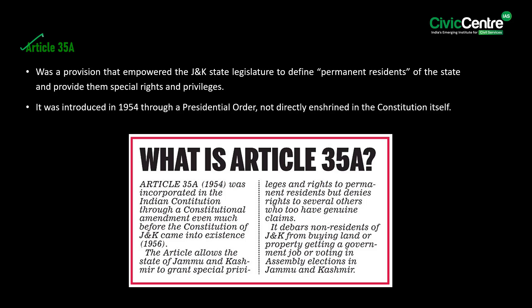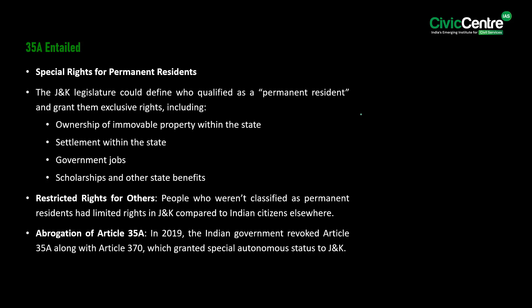Article 35A of the Indian constitution was a provision that empowered the Jammu and Kashmir state legislature to define permanent residents of the state and provide them special rights and privileges. Introduced in 1954 through a presidential order, not directly enshrined in the constitution itself, it allowed the J&K legislature to define who qualifies as a permanent resident and grant them exclusive rights including ownership of immovable property within the state, settlement within the state, government jobs, and scholarships and other state benefits. People not classified as permanent residents had limited rights in J&K compared to Indian residents elsewhere. In 2019, the Indian government revoked Article 35A along with Article 370.